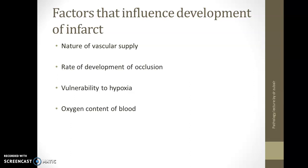Third is vulnerability to hypoxia — how vulnerable is the tissue to hypoxia? Tissues such as the brain and the heart are vital organs and are very vulnerable to hypoxia. In the brain, if there is hypoxia for a minimum of 30 seconds to 1 minute, the tissue starts to die. On the other hand, skeletal muscles are very robust — even if hypoxia is prolonged for 2 to 3 hours, they still have the ability to withstand it. Finally, the oxygen content of the blood also matters — how much is the patient oxygenated — and that also influences the development of an infarct.